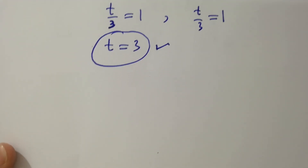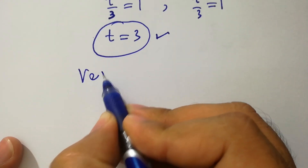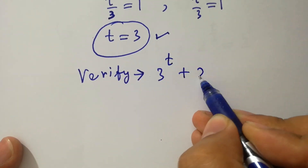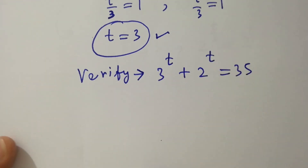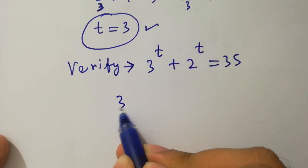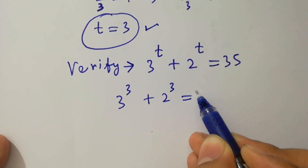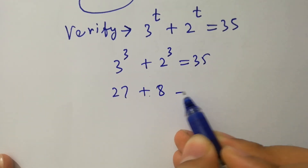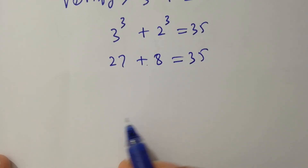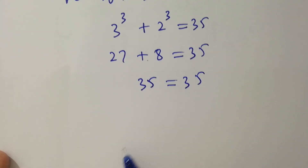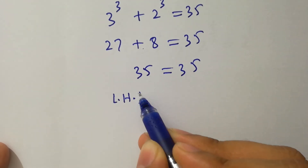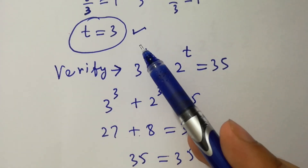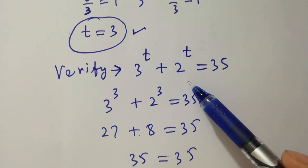In the next step I am going to verify: 3 to the power t plus 2 to the power t equal to 35. Put the value of t which is 3: 3 to the power 3 plus 2 to the power 3 equal to 35. We have 3 times 3 is 9, and 9 times 3 is 27, plus 2 cubed is 8, equal to 35. 27 plus 8 we have 35 equal to 35. Left hand side equal to right hand side, which shows that the value of t equal to 3 satisfies this equation.